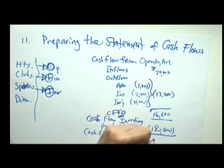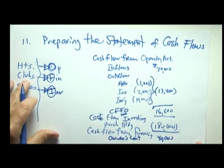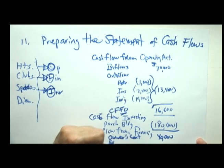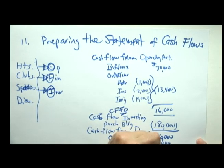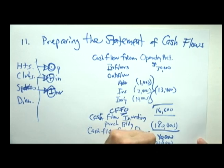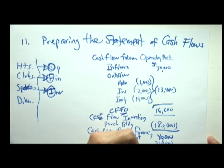So we would list owner's contribution, $40,000, and bank loan, $210,000. So the total cash flow from financing activities was $250,000.